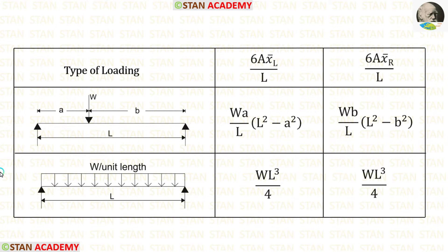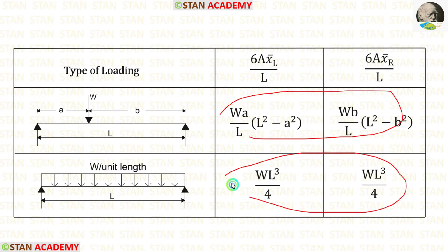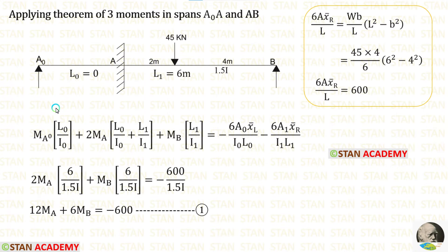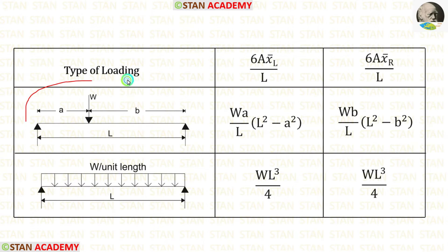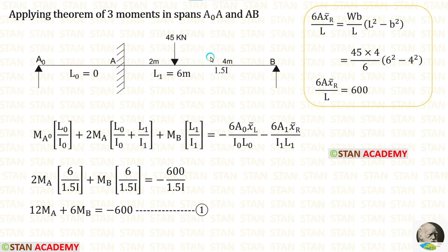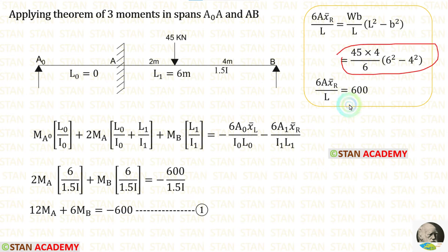Alternatively, we can use formulas to make the equations more easily. Most problems involve beams loaded with point loads and UDL, so if we study these formulas we can form equations quickly. Let us apply the formulas in spans A0A and AB for equation 1. The three TAM terms are 0. In span AB, a point load is acting, so we calculate 6A·x-bar right / L using the formula WB/L × (L² − B²). With W = 45, B = 4, L = 6, we get 600. We eliminate 1.5I as it is common, giving equation 1.